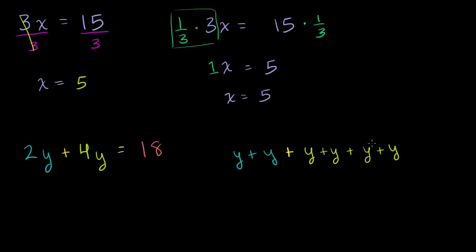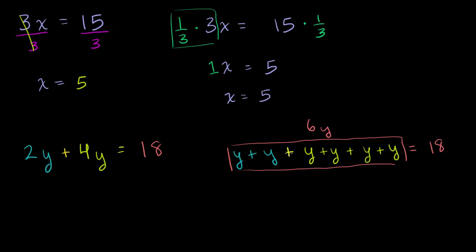How many y's do I have on the left-hand side? I have 1, 2, 3, 4, 5, 6 y's. So you could simplify this as 6y is equal to 18. And it makes complete sense: 2y plus 4y is 6y. If I have 2 apples plus 4 apples, I have 6 apples. If I have 2 y's plus 4 y's, I have 6 y's.